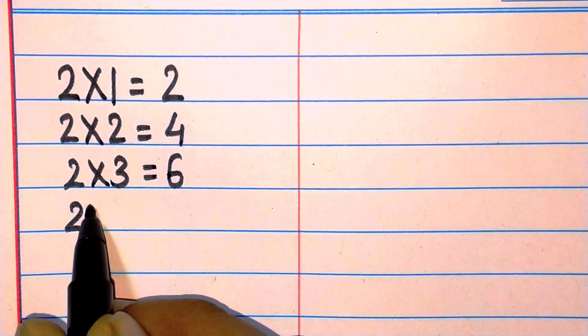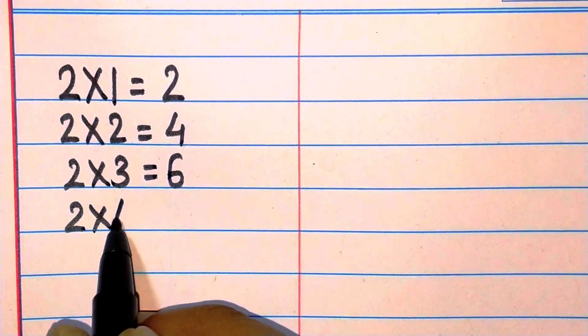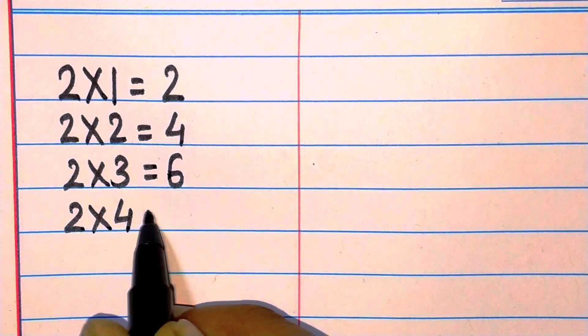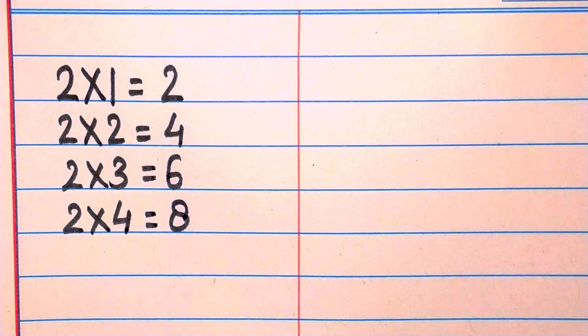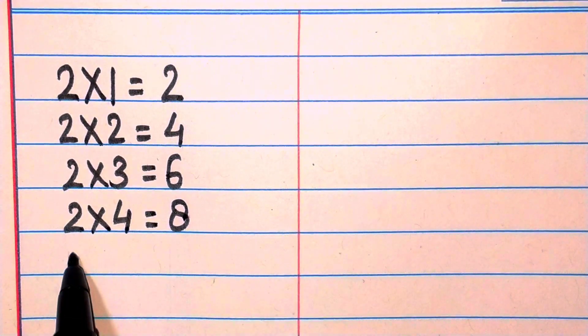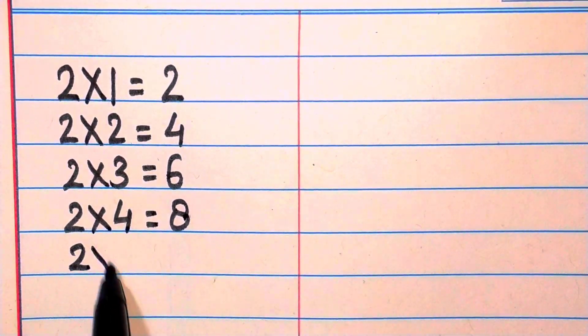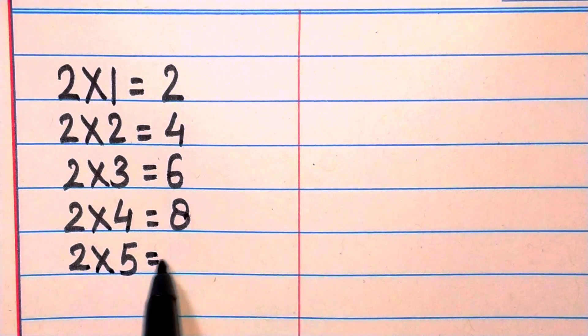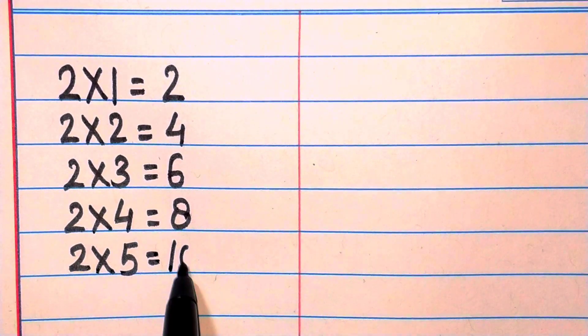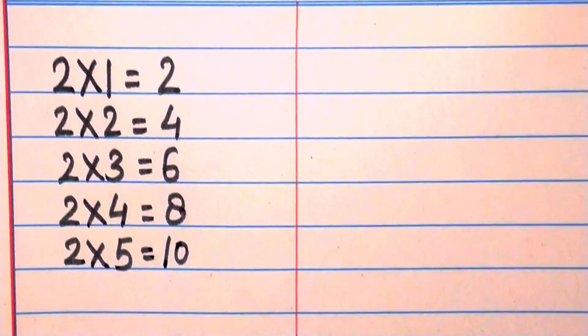Two four are eight, two five are ten, two six are twelve.